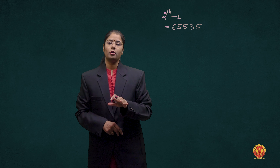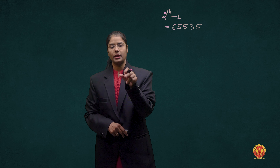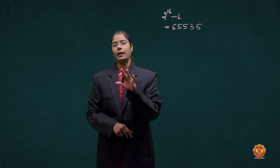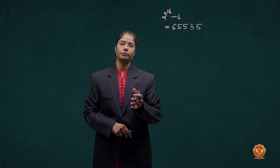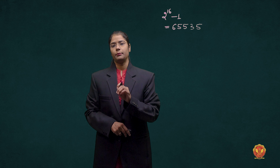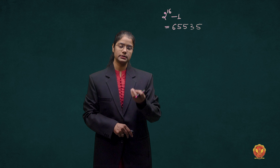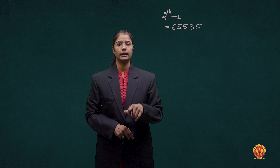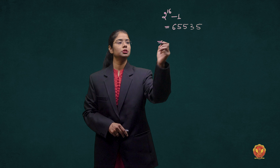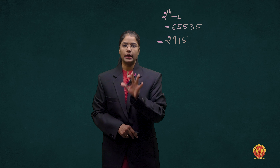This means we can transfer a maximum of 65535 bytes in one DMA transfer. The size of the file is given as 29154 KB. Let's calculate how many times the DMA controller needs to take control of the bus.